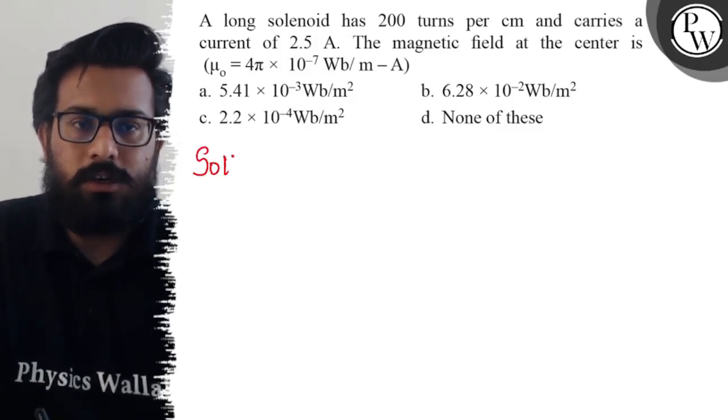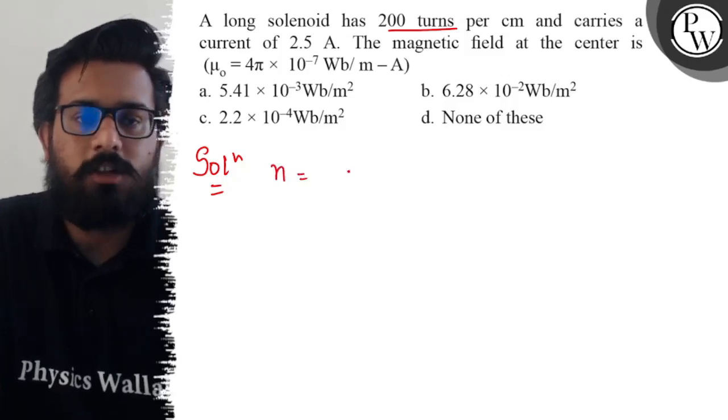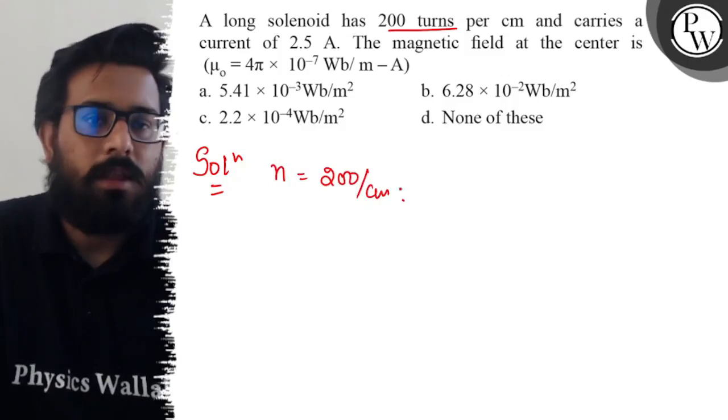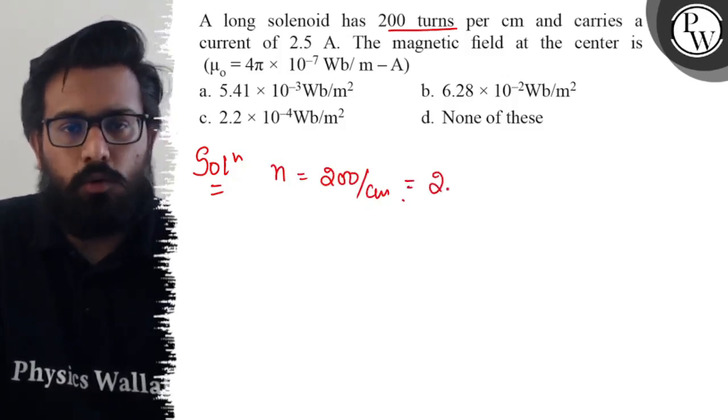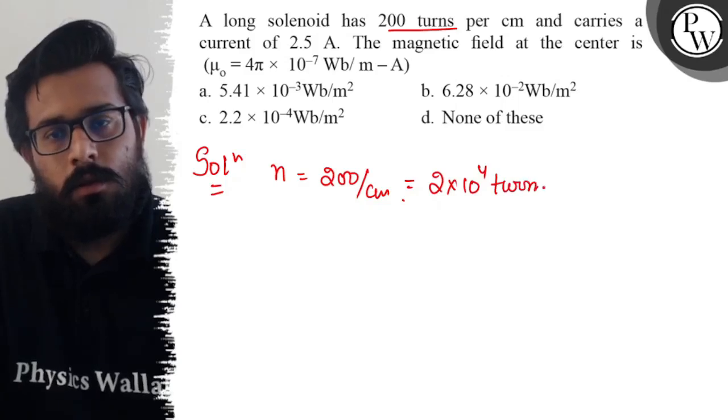So here in this problem, a long solenoid has 200 turns per centimeter. That means the number of turns per centimeter is 200. If you convert it, it comes out with 2 × 10^4 turns per meter.